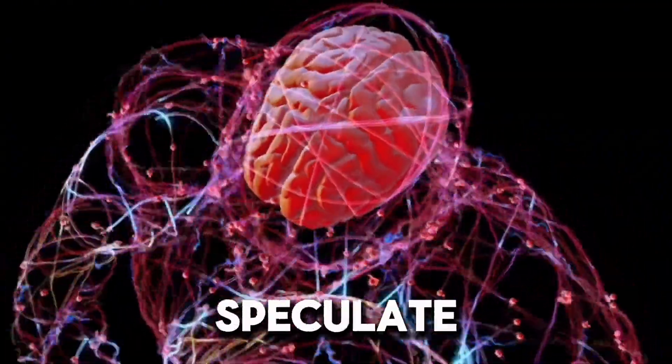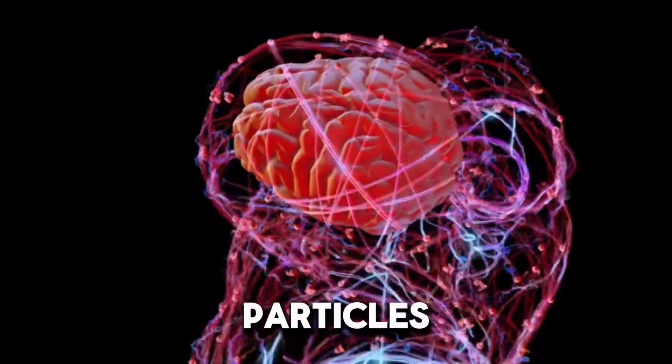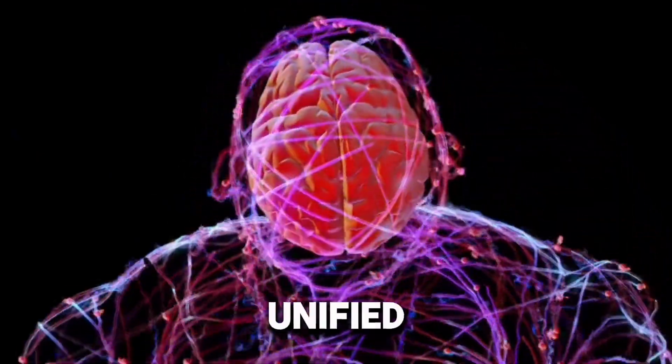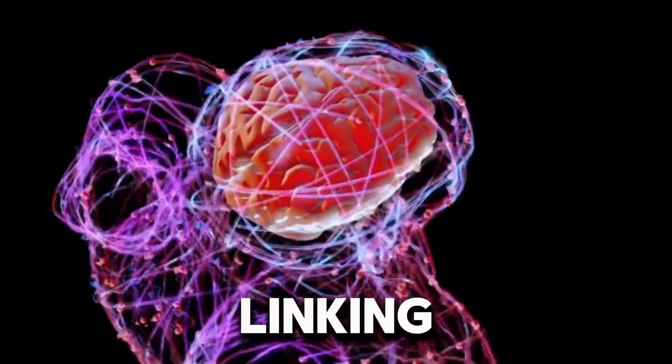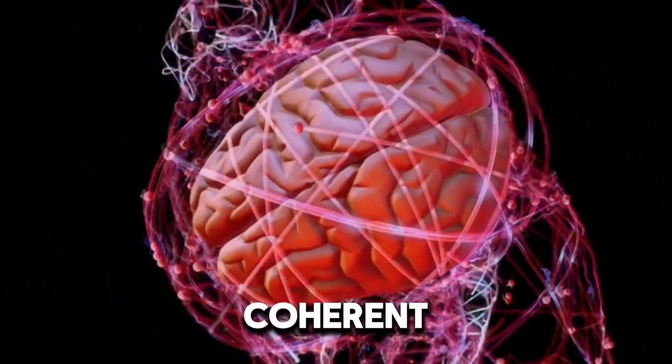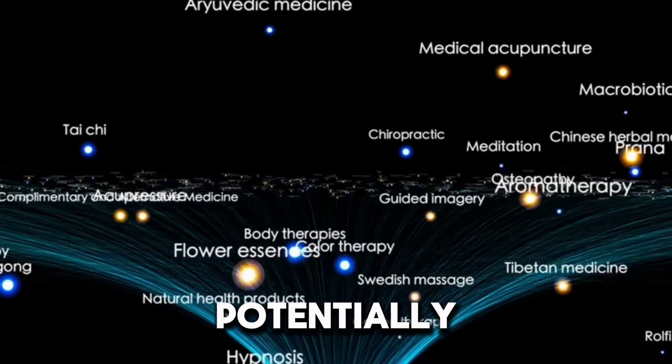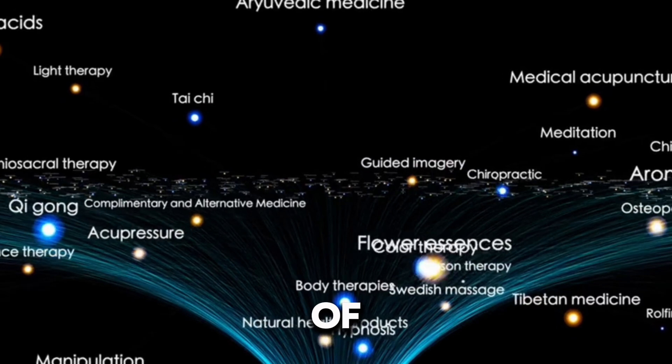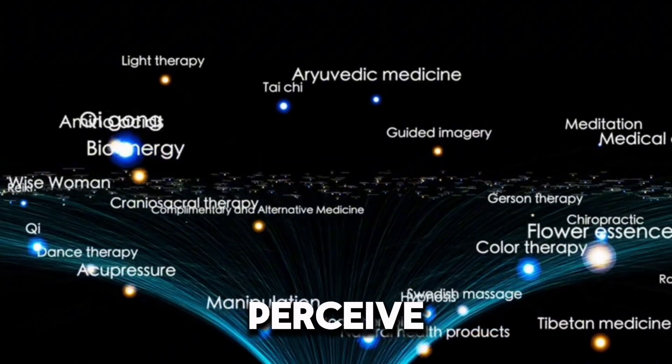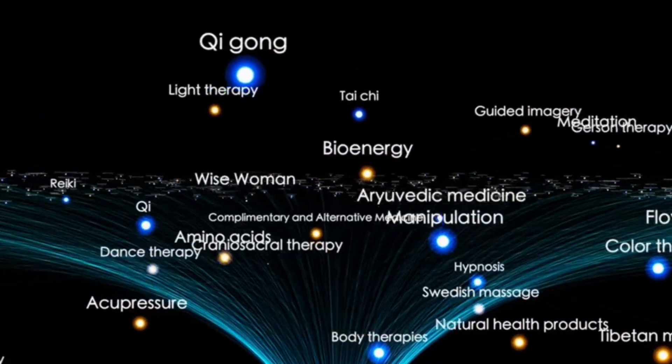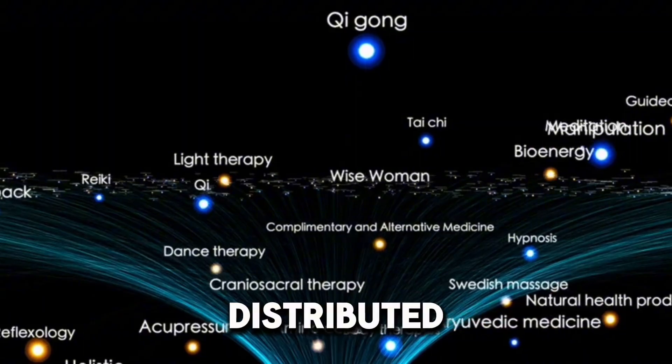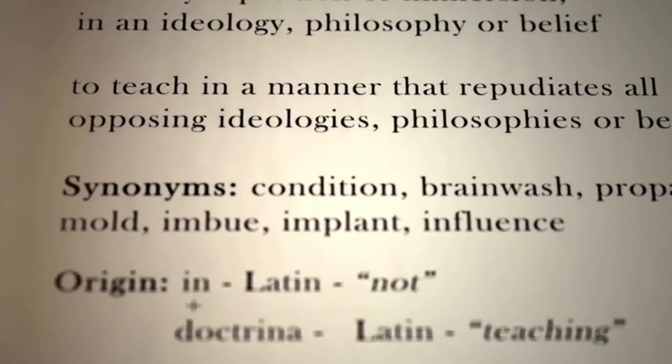Some researchers speculate that entangled particles within the brain could create a unified field of consciousness, linking various regions and processes in a coherent whole. This could potentially explain the holistic nature of conscious experience, where we perceive a unified self despite the brain's complex and distributed activity.